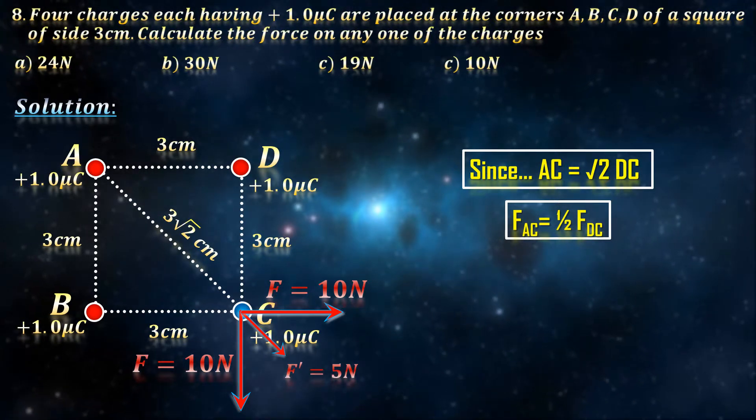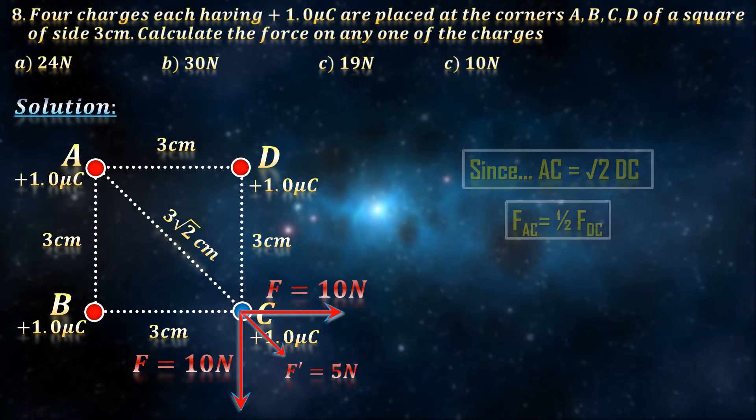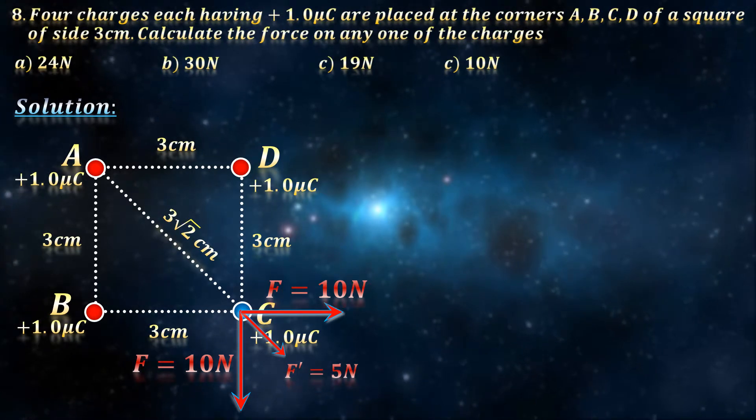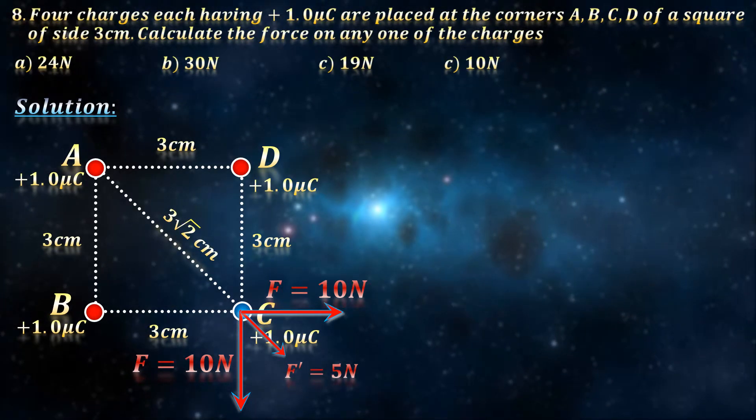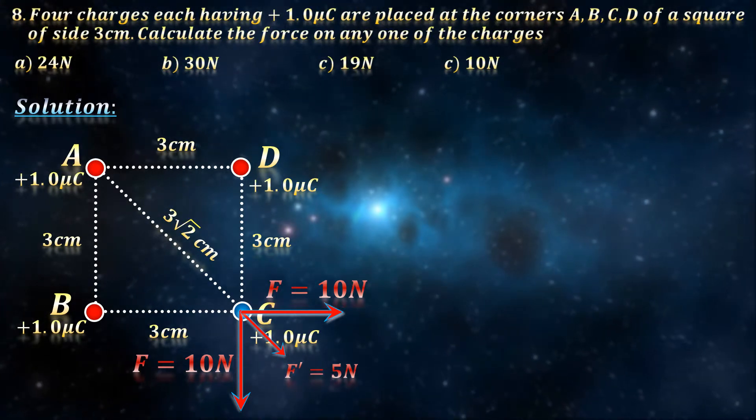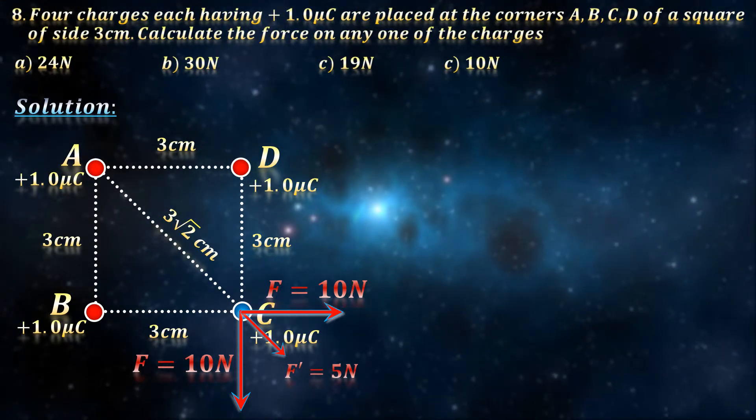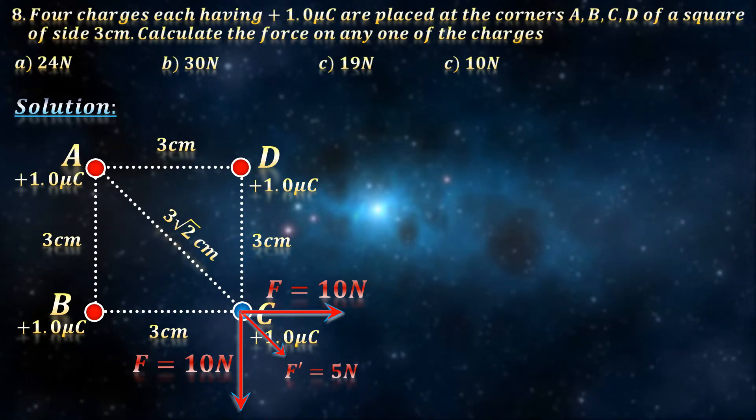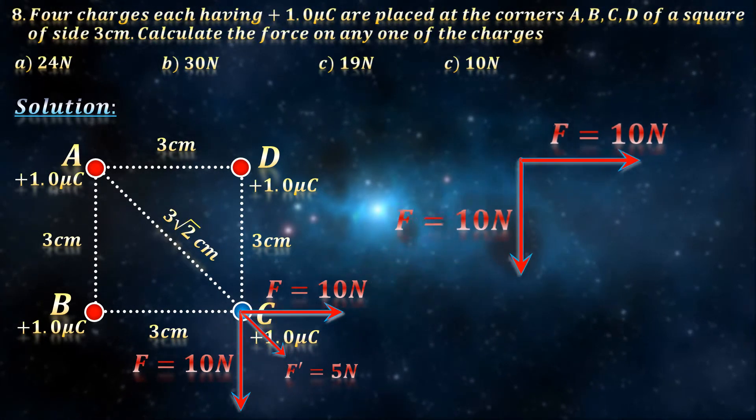So we have to add 3 vectors now. We will first add 2 and then add the resultant of these to the third one. Now there is a smart and a short way of doing this and a silly long way.